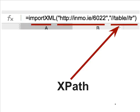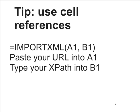This is what an IMPORTXML formula looks like. You can see the pair of brackets with the two ingredients separated by a comma. It's worth highlighting that the URL needs to be in quotation marks, and the XPath does as well. Actually, rather than typing these directly into the formula, a useful tip is to use cell references instead.